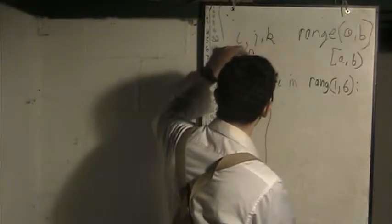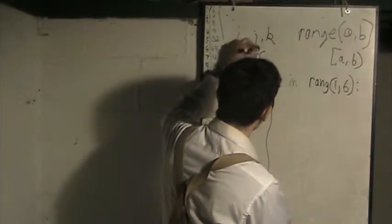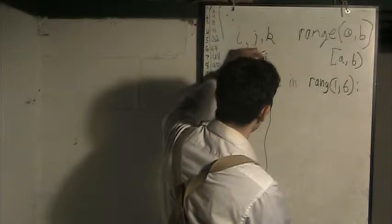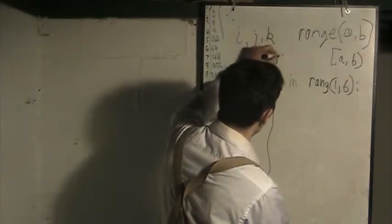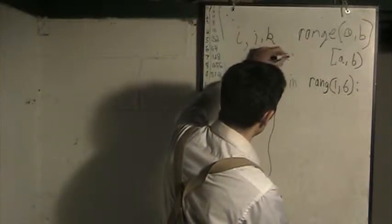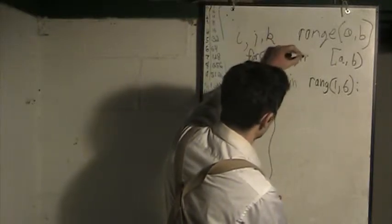And again, just compare this with Java. Java is for, notation is, initialization of I equals 1, colon, I is less than 6, and then the incrementer. Don't worry about that.